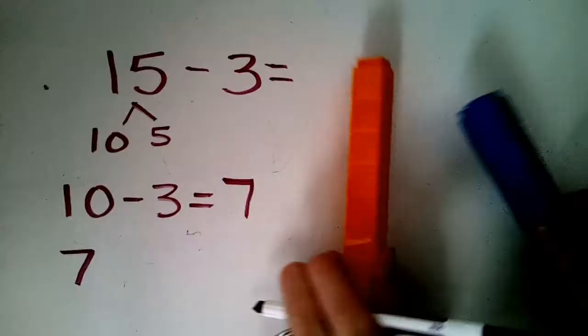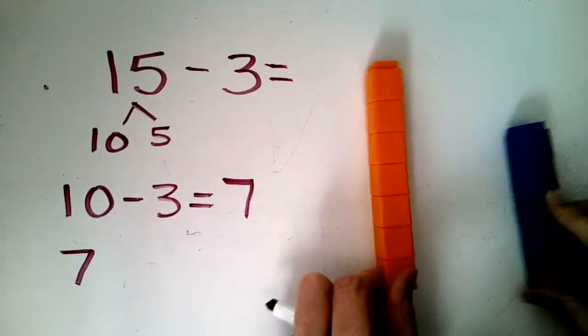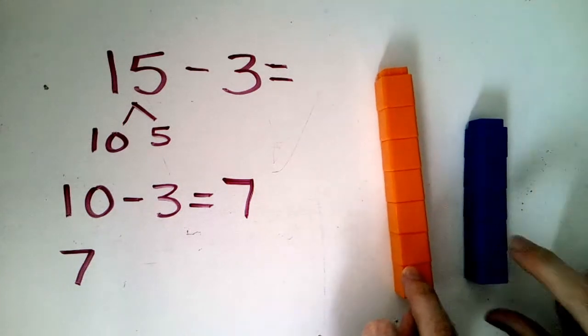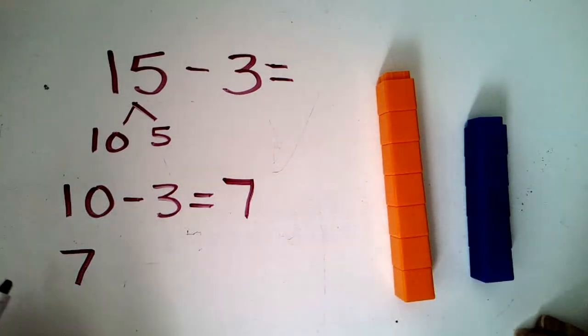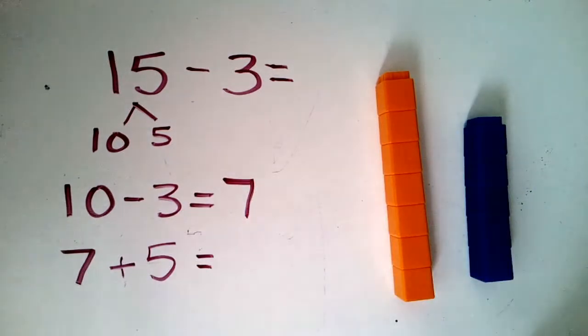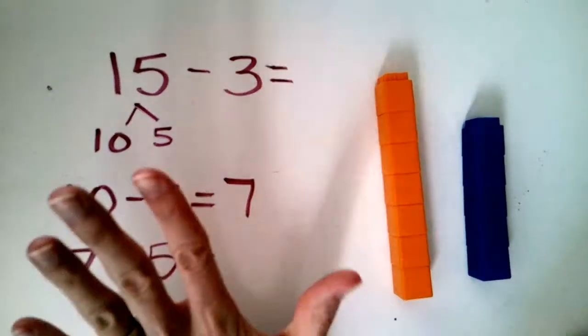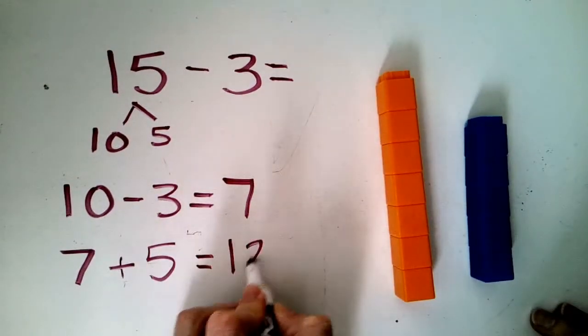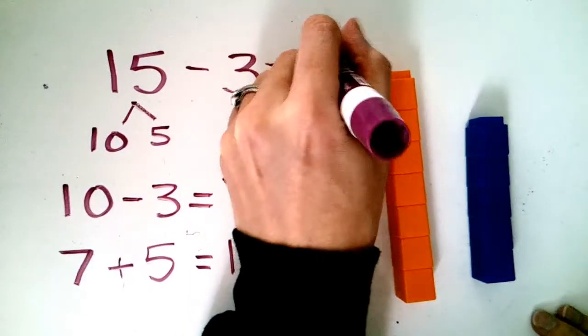Now what we have to do is we have to put these two back together because we kind of split them up to take from the 10. We've got to put them back together because they're all left over still. So, we have seven plus, how many blue cubes do I have? I have five blue cubes, seven and five. I can use a quick make a 10 strategy in my mind. I might count on. I might say seven, eight, nine, 10, 11, 12 is my answer there. So, 15, take away three equals 12.